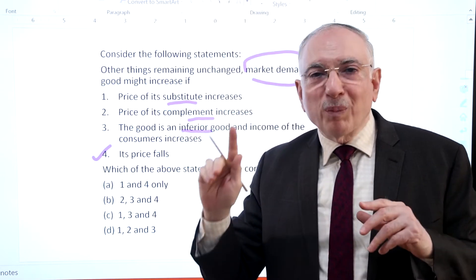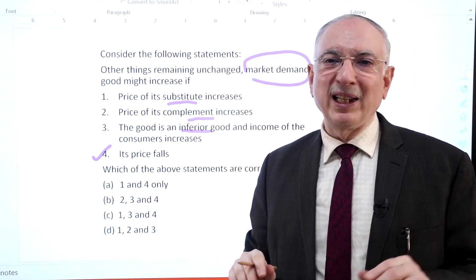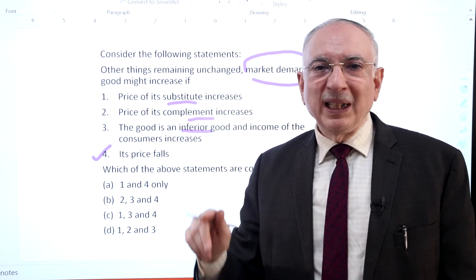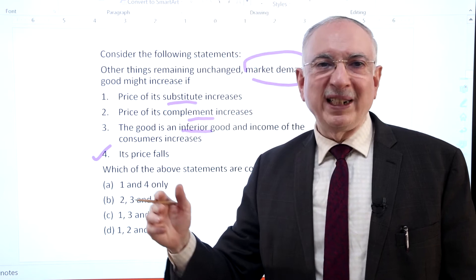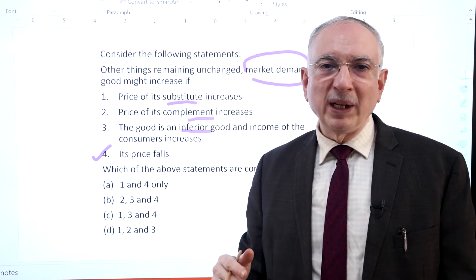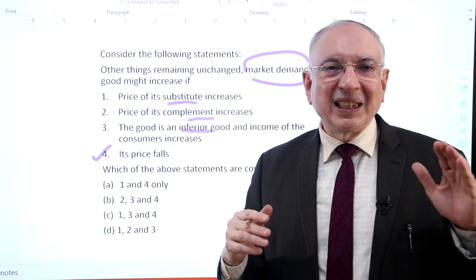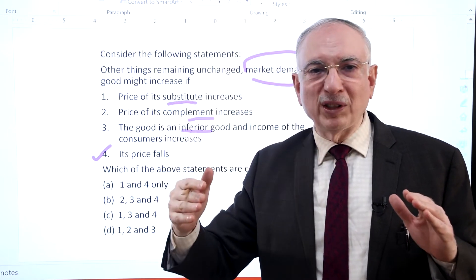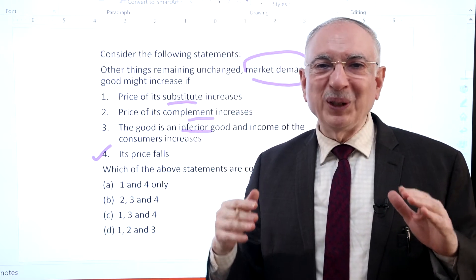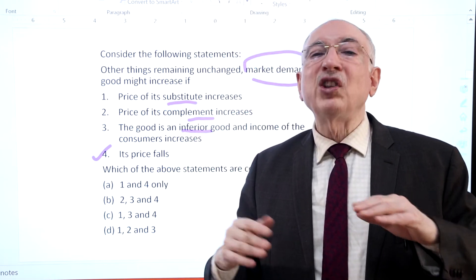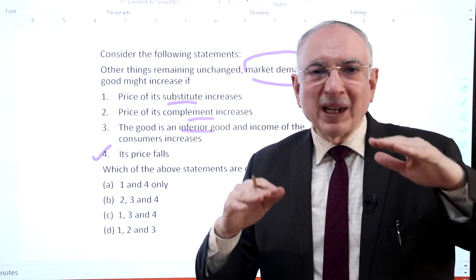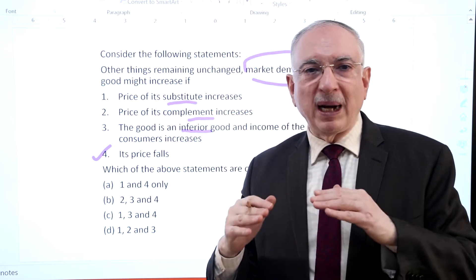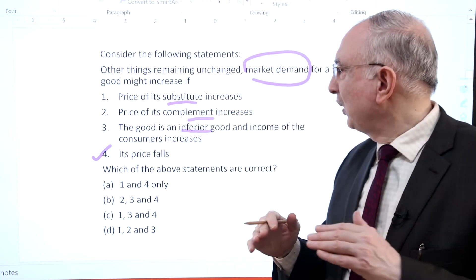A consumer's demand for a normal good moves in the same direction as the income of the consumer. However, in the case of an inferior good, demand moves in the opposite direction of income. As the income of the consumer increases, the demand for an inferior good falls because it has a downward sloping curve. Examples of inferior goods include coarse cereals — with rising income, consumers demand more of fine cereals such as rice and wheat instead of jowar and bajra. Hence statement 3 is not correct.